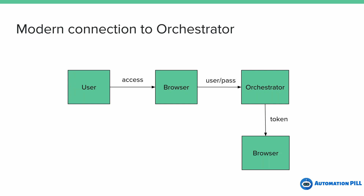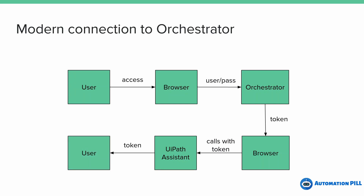There are some properties beside the token value — some availability dates and things specific to this authentication. Then the browser calls the UiPath Assistant, which in my case that call is made invisible and you need to agree. It then sends back to the UiPath Assistant the token that was retrieved from the Orchestrator.